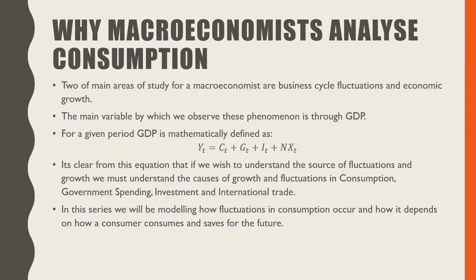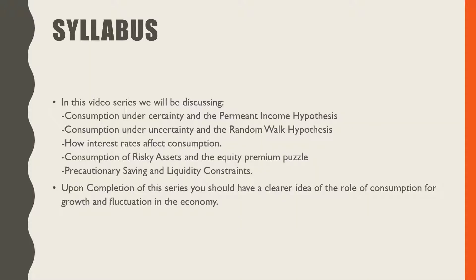In this series, we'll be modeling how these fluctuations in consumption occur and how it depends on how a consumer consumes and saves for the future. We will be discussing consumption under certainty and the permanent income hypothesis, and consumption under uncertainty and the random walk hypothesis.